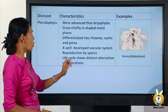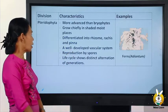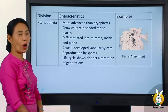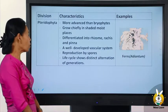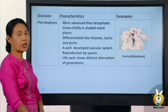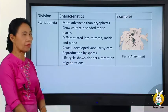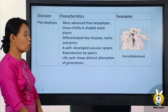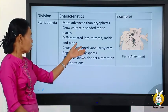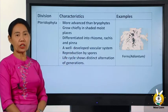Pteridophytes have a well-developed vascular system and are reproduced by spores. Their life cycle shows distinct alternation of generations.